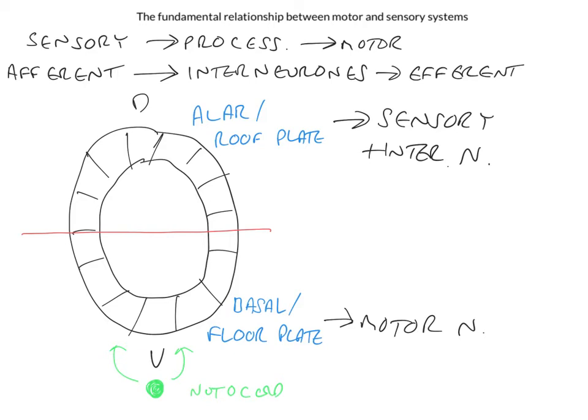So parts of the nervous system that are dorsal, i.e. posterior, tend to contain sensory neurons. Parts of the nervous system that are ventral, i.e. anterior, tend to contain motor neurons. And this is a very important distinction for us to make. Let's take a look at some specific examples of this.